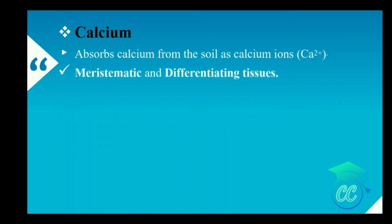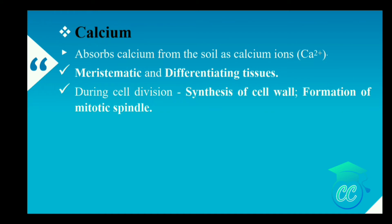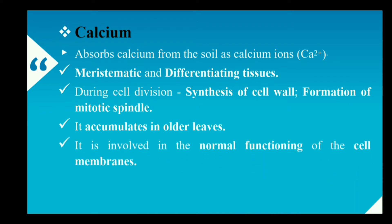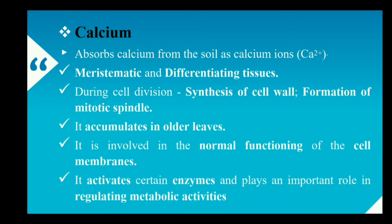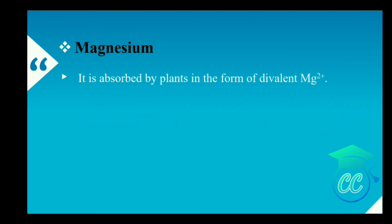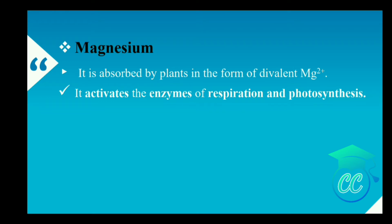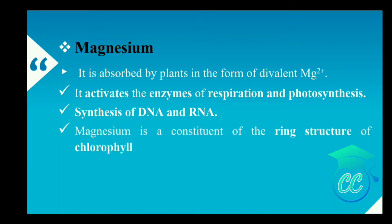Calcium is absorbed in the form of calcium ions and is present in all the meristematic and differentiating tissues. Calcium takes part during cell division — in the synthesis of cell wall and formation of the mitotic spindle. It accumulates in leaves and is involved in normal functioning of the cell membrane. It also activates certain enzymes and plays an important role in regulating metabolic activities. Next, magnesium. Magnesium is absorbed in the form of magnesium ions. It activates enzymes of respiration and photosynthesis, helps in the synthesis of DNA and RNA, is a constituent of the ring structure of chlorophyll, and helps to maintain the ribosome structure.